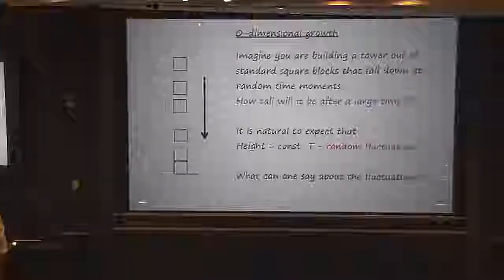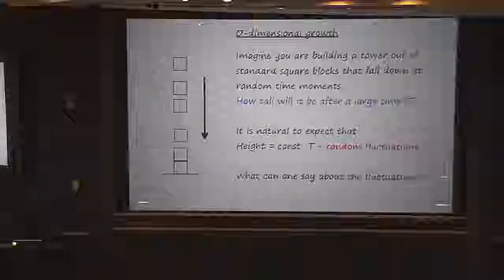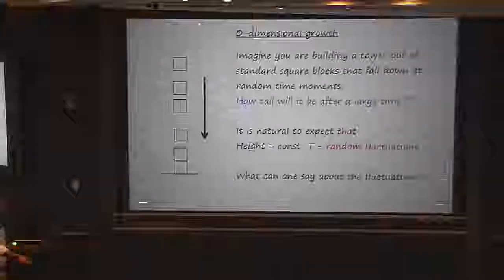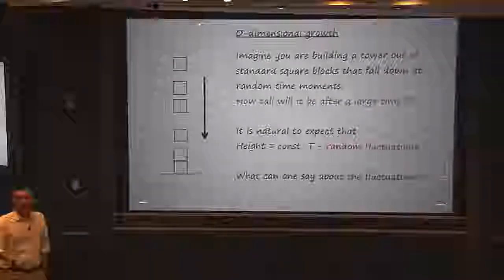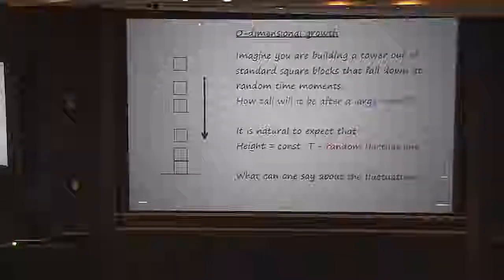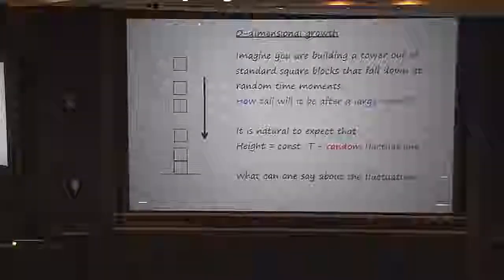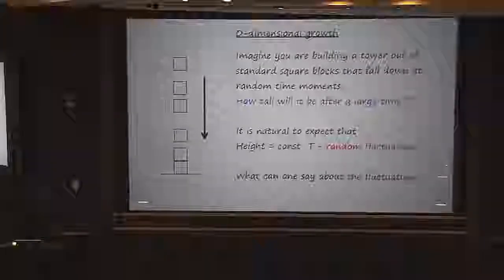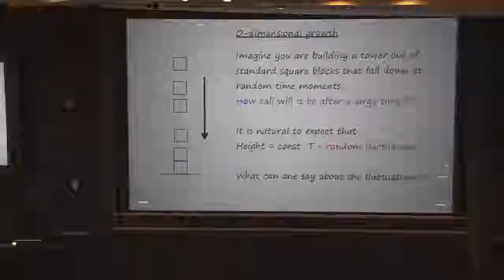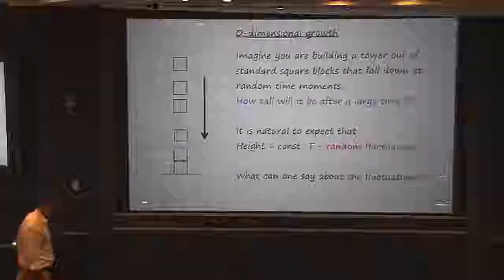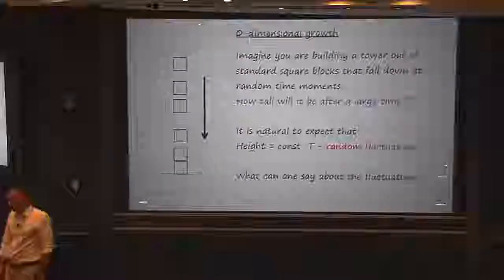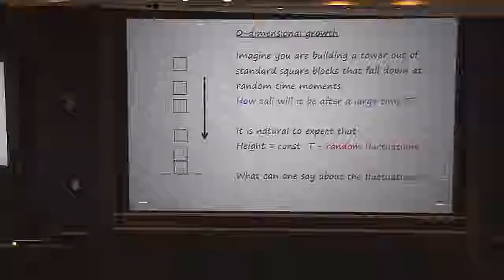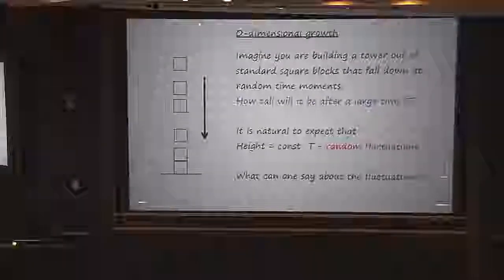I'll assume that there are plenty of blocks on the floor, so you don't need to go to the corner of the room to find a new one. So the process is roughly stationary in time — you keep building the tower. If you have plenty of blocks, then in the first approximation, the growth is going to be linear. There is some speed with which things are growing, and the height of the tower is going to be the speed times the time.